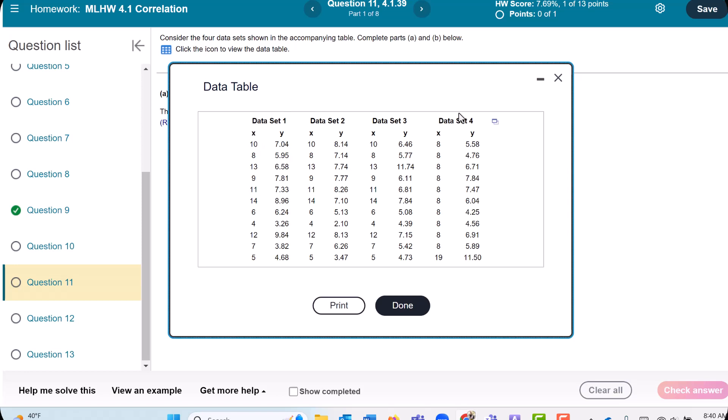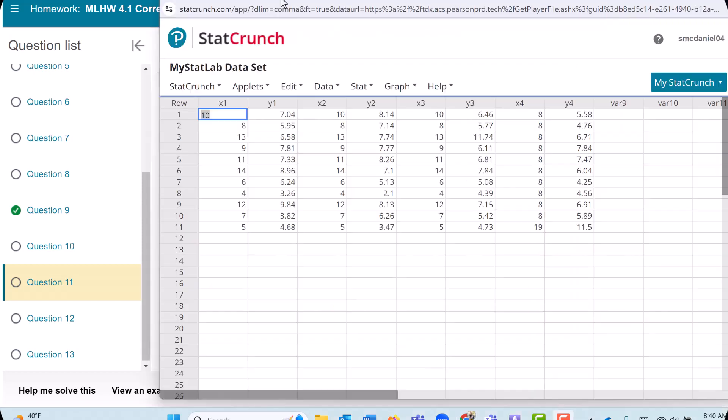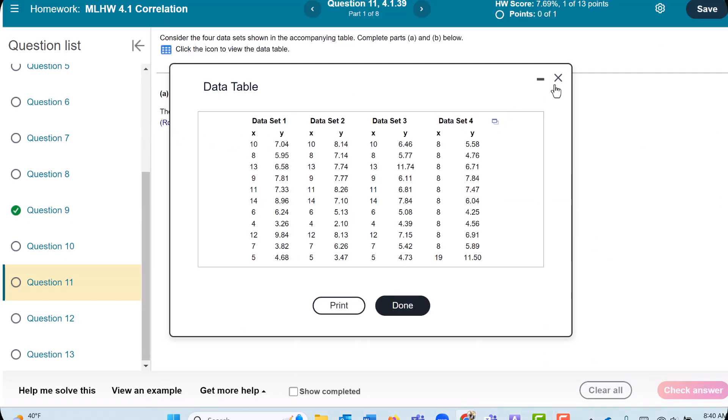We have data set 1, 2, 3, and 4. I'm going to go ahead and open this directly into StatCrunch. Okay, so here's my data. Let's see what questions it asks. Close this out.